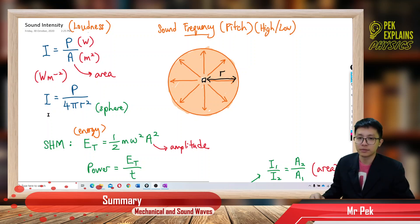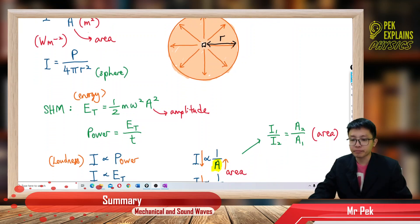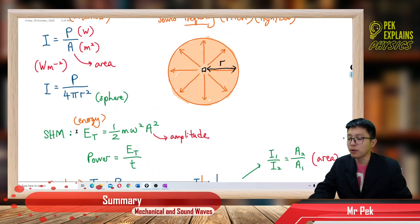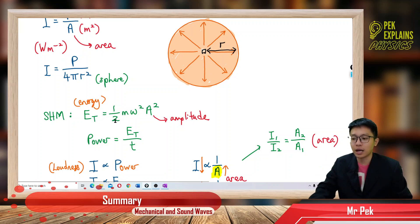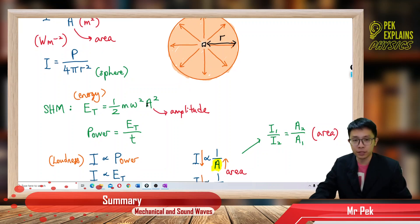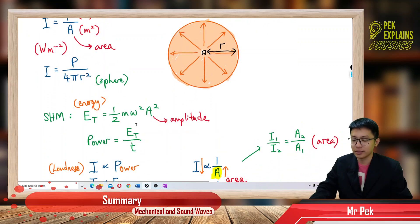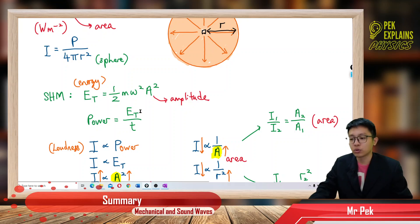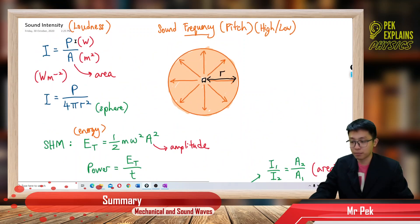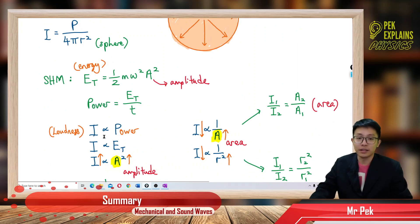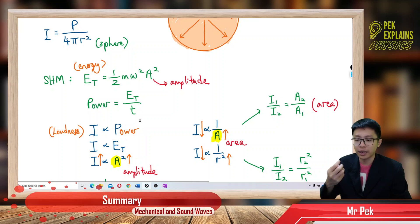Let's look at the formula for total energy in simple harmonic motion, which is ½mω²A², where A is the amplitude — not the area. Power is total energy over time. Intensity is proportional to power — the higher the intensity, the louder the sound, and the higher the power emitted. Since power equals total energy over time, intensity is also proportional to total energy.